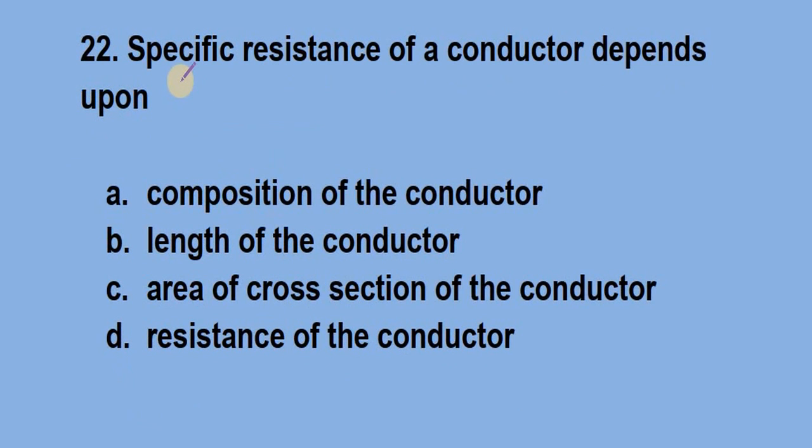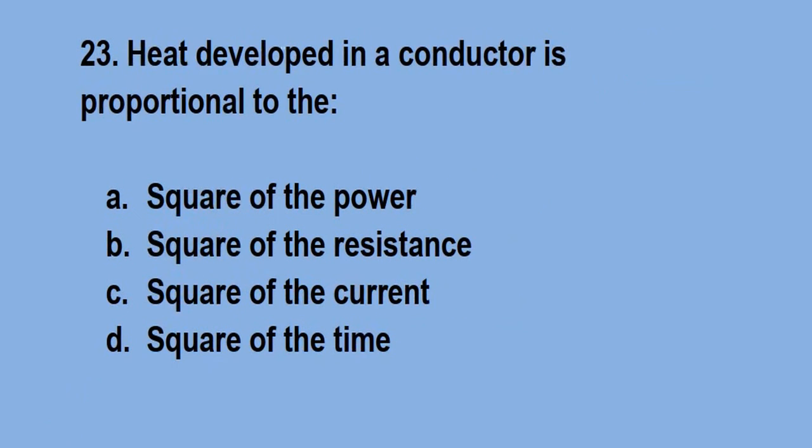Question number 22, specific resistance of a conductor depends upon? Answer is option A, composition of the conductor. Question number 23, heat developed in a conductor is proportional to the? Answer is option C, square of the current that is H is equal to I square RT.